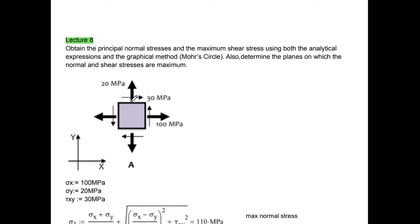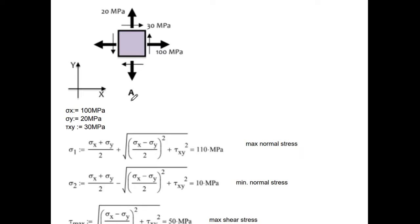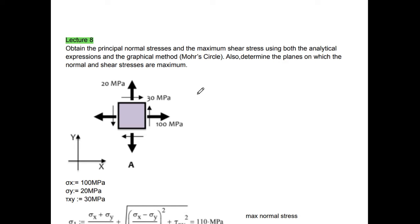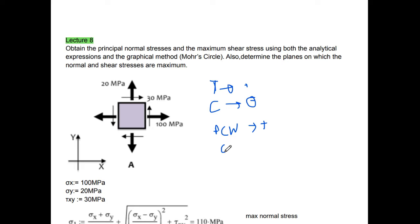In the question you will be given a body with forces in different directions, and shear forces and normal stresses are given. Let me describe the sign convention. For tensile normal stress we take it as positive, and for compressive we take it as negative. For shear stress which causes anti-clockwise rotation we take it as positive, and for clockwise rotation we take it as negative. This is the sign convention we generally follow.